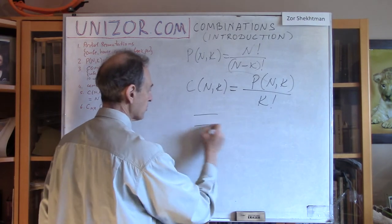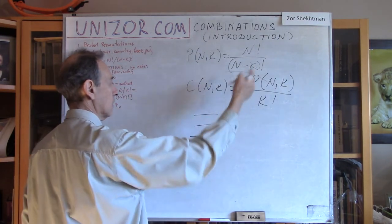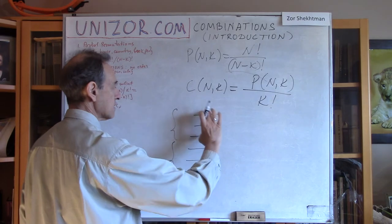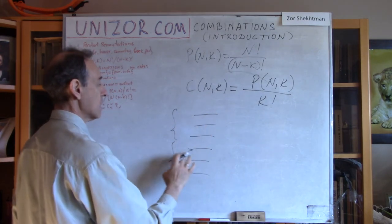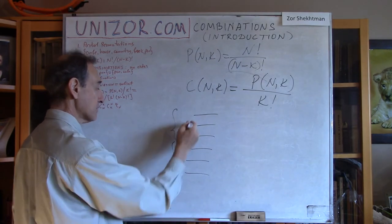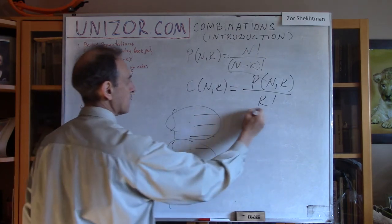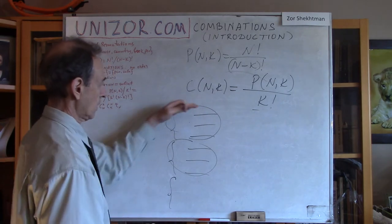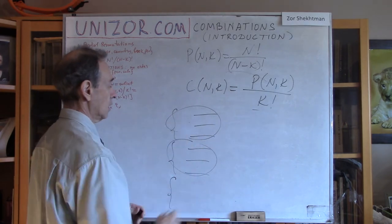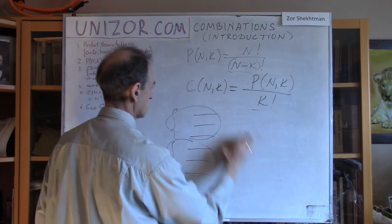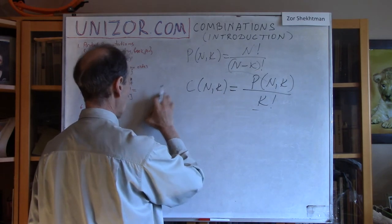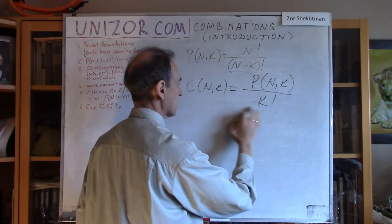If we have the set of all different partial permutations and group it — each group contains only the different permutations within the same subset — it constitutes one combination. Another group contains different elements in the subset positioned in many different orders. We are interested in all permutations that differ only by order within this subset, and that's again k factorial. So if you have all partial permutations of two objects out of five, group them — all permutations with the same subset in different orders — each group always has k factorial different permutations. Which means we have to divide by k factorial the total number of partial permutations to get the number of combinations.